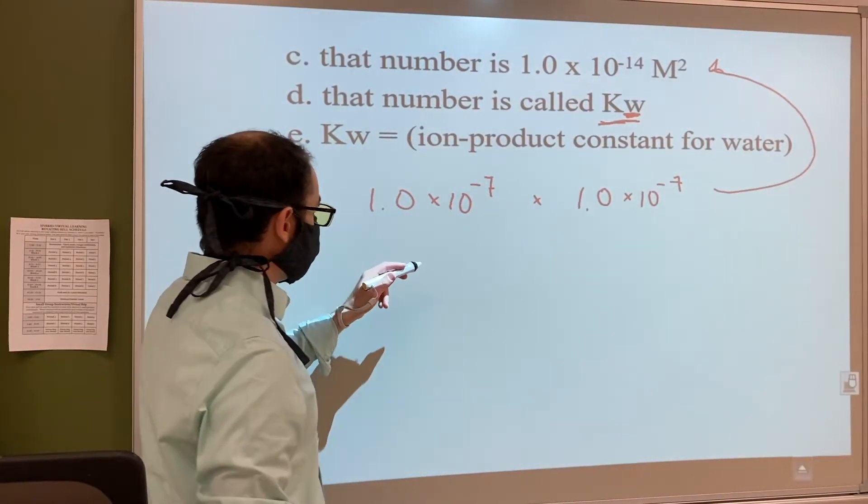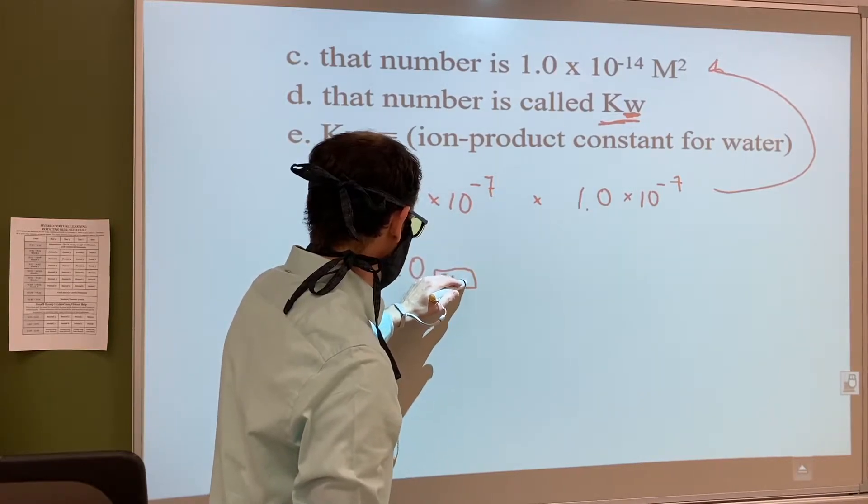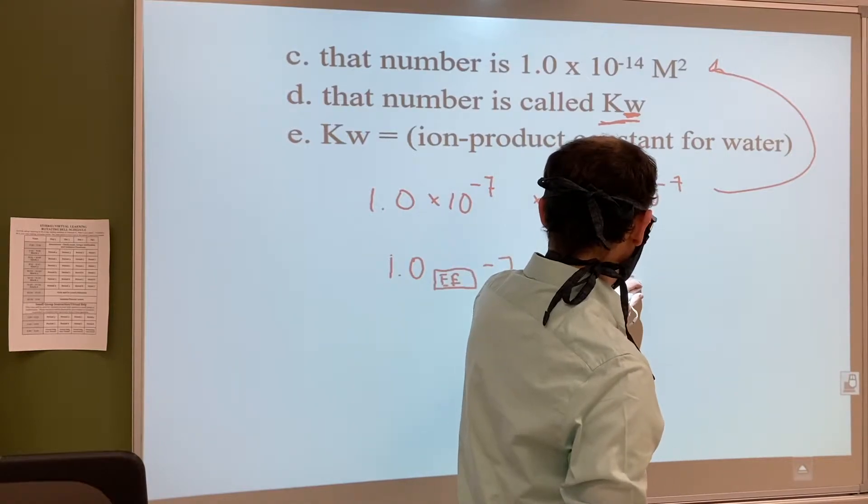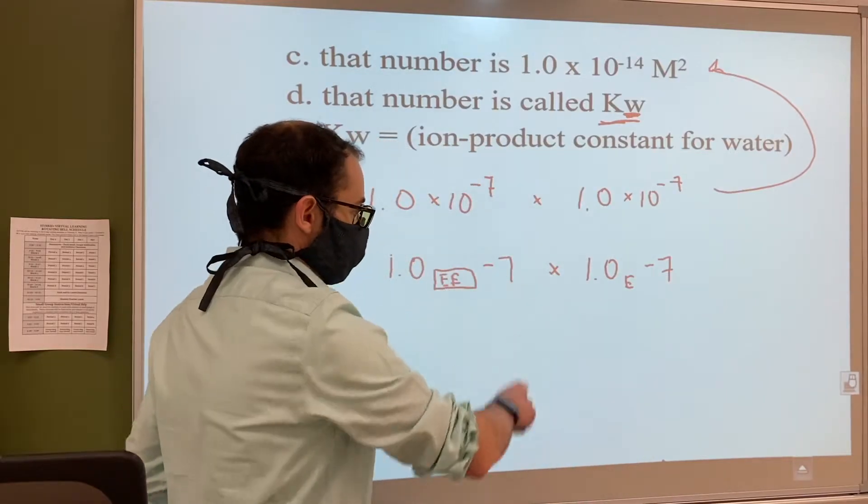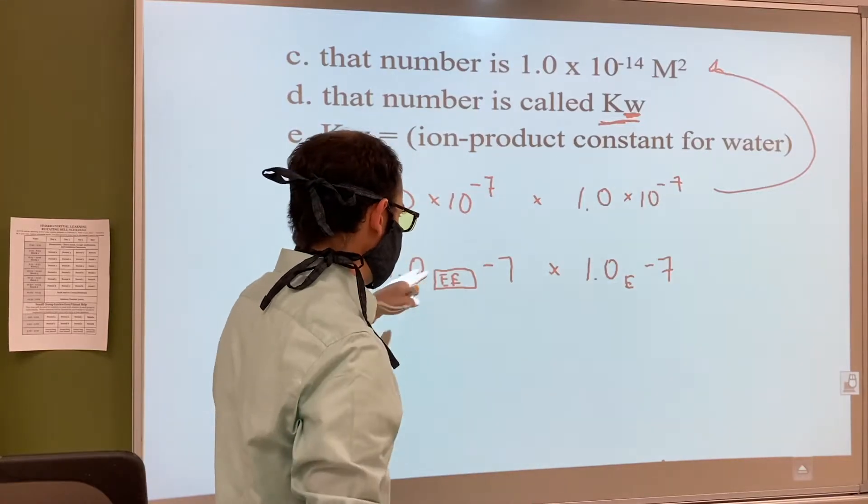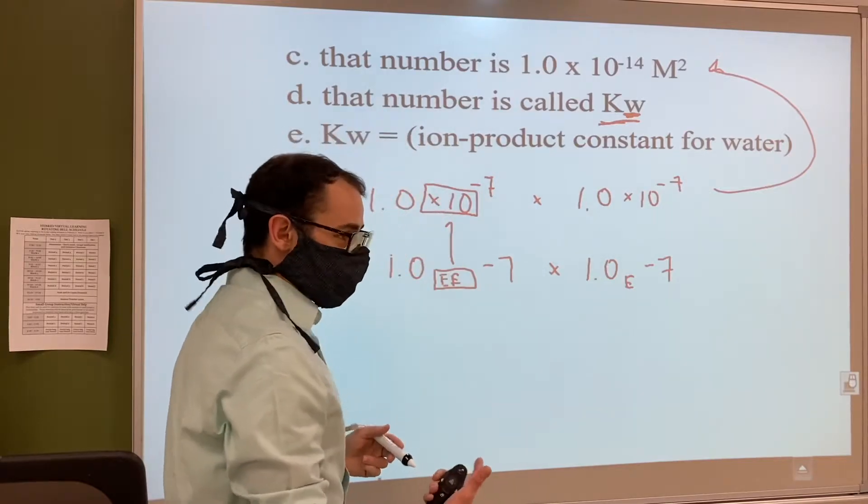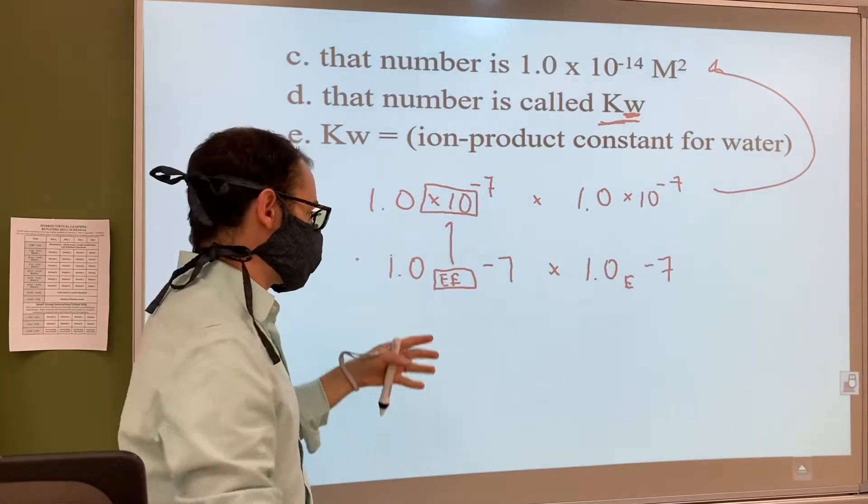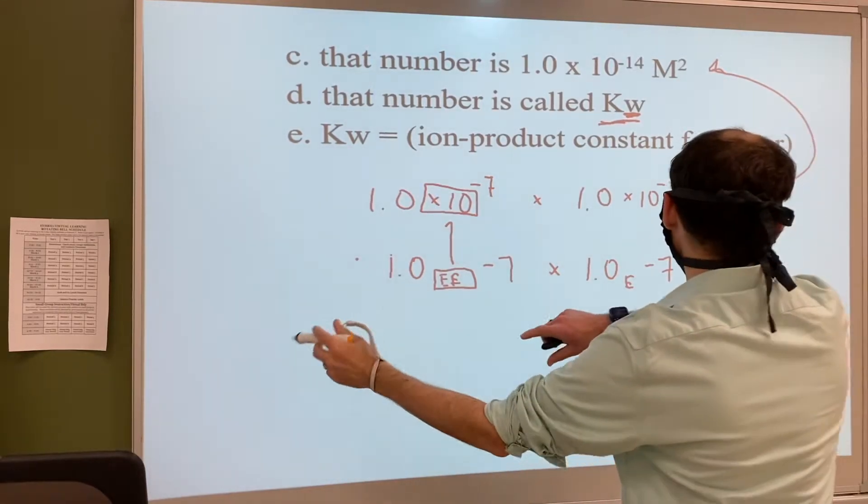Depending on what calculator you have, you're going to type this in as 1.0 and then that E button, then negative 7, then times 1.0 E negative 7. That's all you have to put in there. You don't put like 'times E' or 'E times 10' or any of that stuff. This E button represents all of this. Some calculators have a button that looks like times 10 to a little exponent - you use that button instead of the E button.